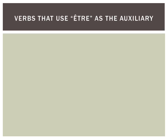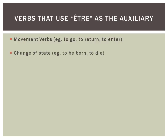Although most verbs use avoir as the auxiliary verb, there are certain groups of verbs which use être instead. Movement verbs, for example the verb to go — aller — or to return — retourner — to enter — entrer. Also verbs which include a change of state, for example to be born — naître — and to die — mourir.